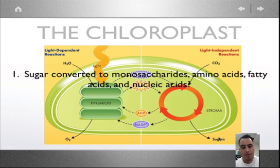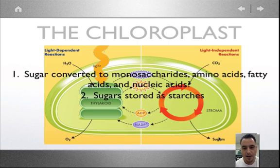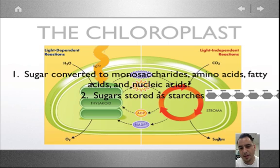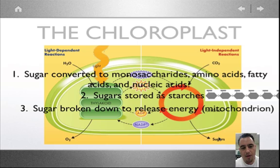So what happens to the sugar? They're converted into monosaccharides, amino acids, fatty acids, and nucleic acids. Sometimes if there's a lot of sugar, it is stored as starches, remember that, which are those polysaccharides. Or the sugar that is made might be needed right away. And so it'll go into the mitochondria. Don't forget that plants also have a mitochondria. They not only make the food, but they got to break it down with the mitochondria to get that energy from it.